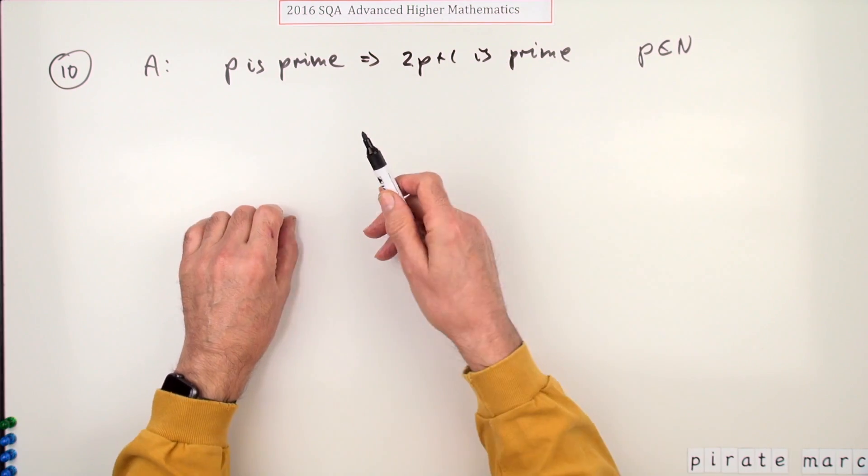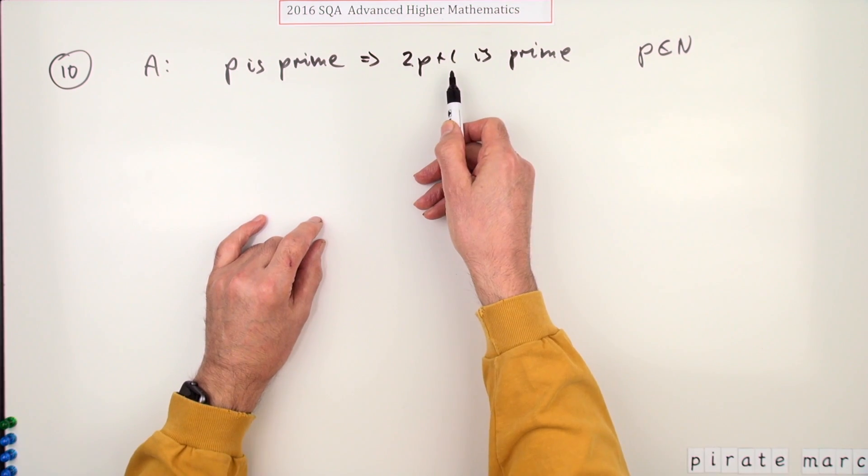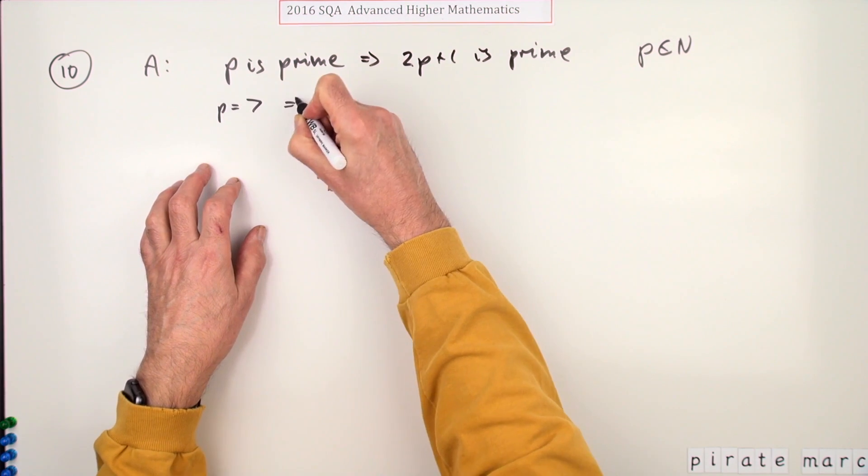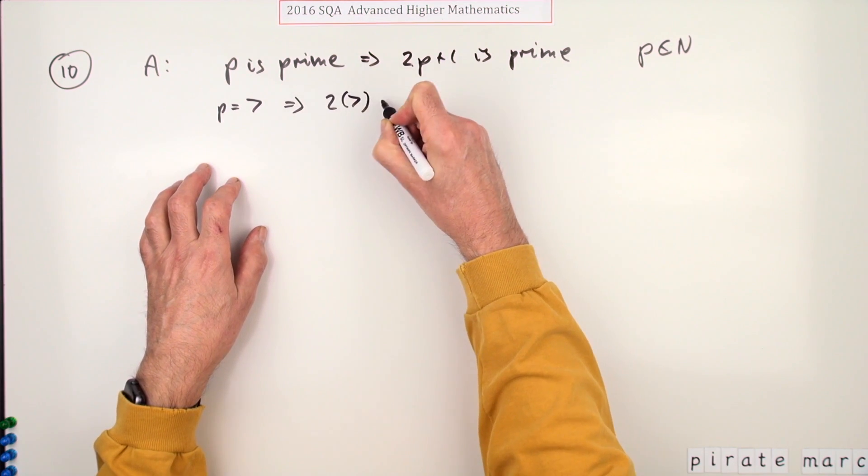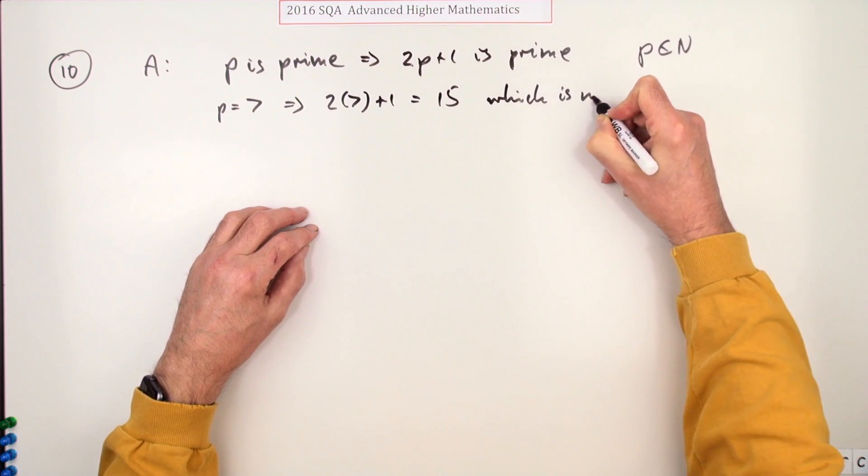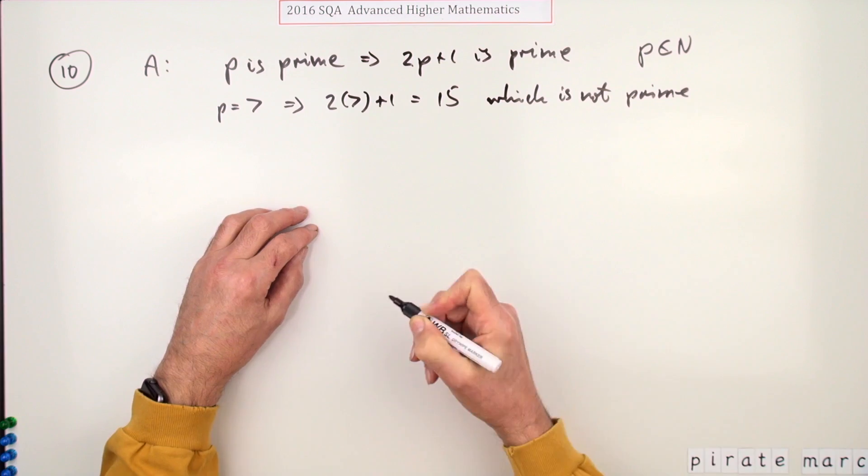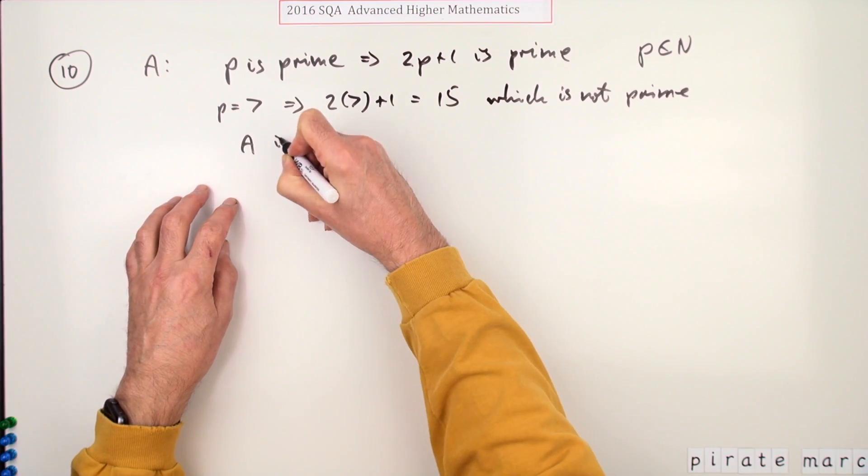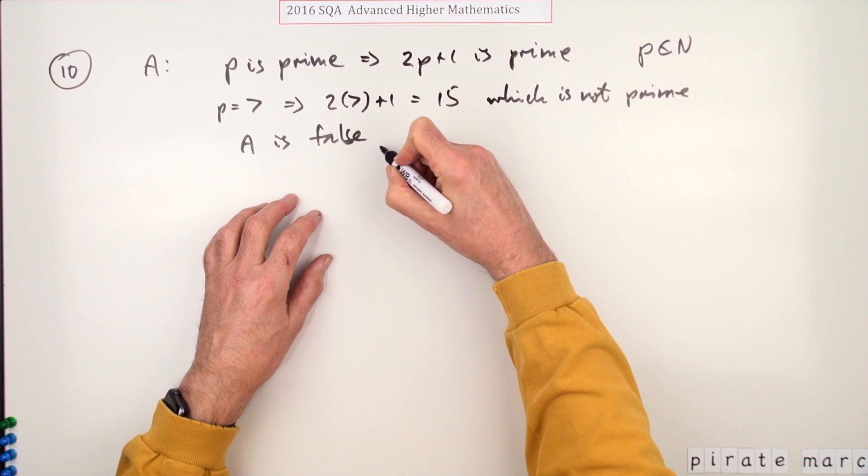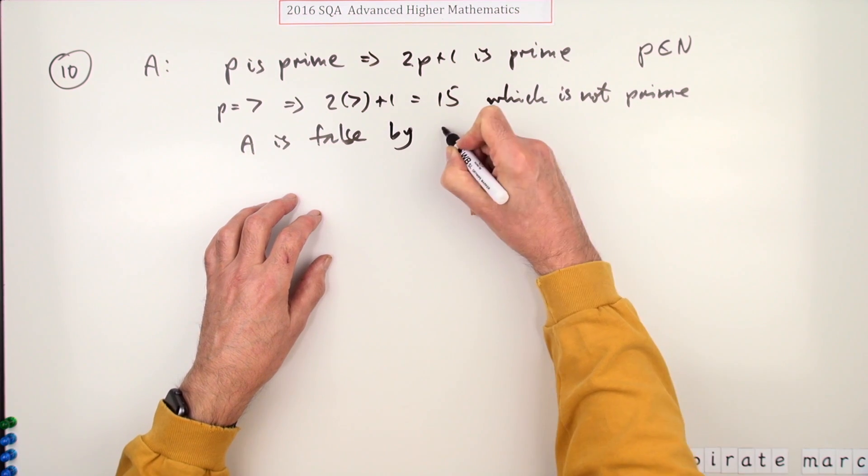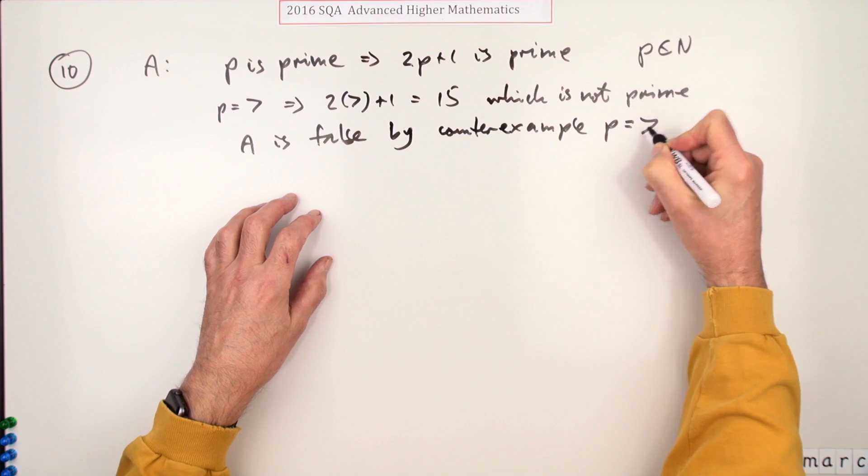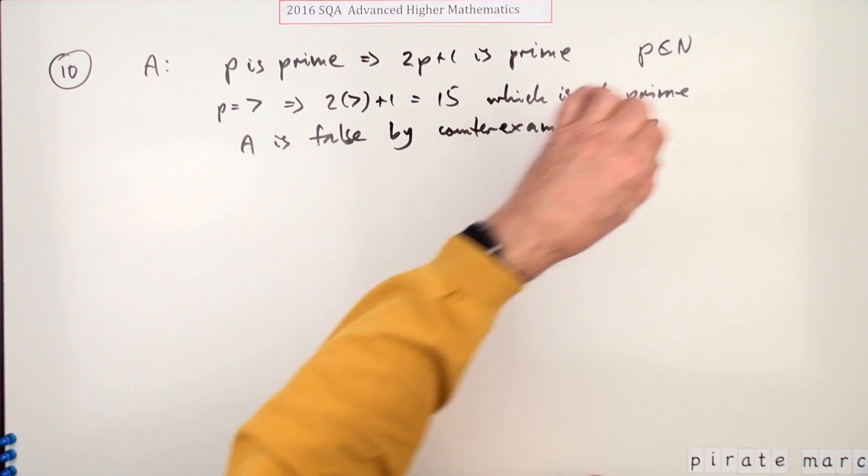Then you try seven - that comes to 15. So p equals seven means that two times seven plus one is 15, which is not prime. So A is false, but usually then finish off by saying by counterexample p equals seven, and that's a mark.